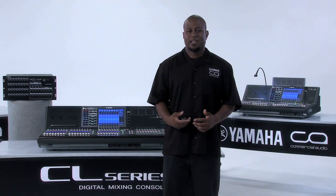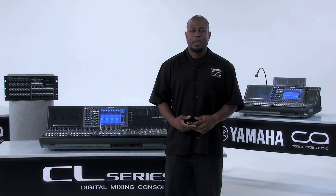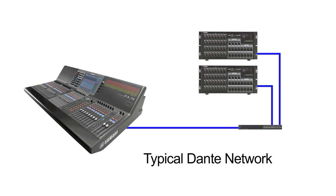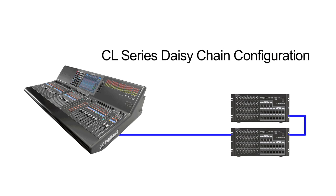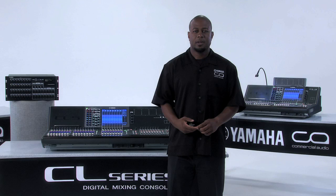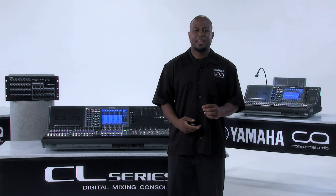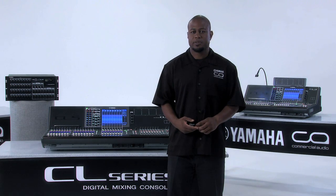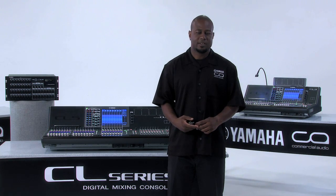In a typical Dante network, each one of the devices would be connected to a switch. With the CL series digital mixer, you have the option of setting your devices into daisy chain mode and removing that switch from the network. Instead, you would connect the primary and secondary ports of your Dante network in a daisy chain style topology.